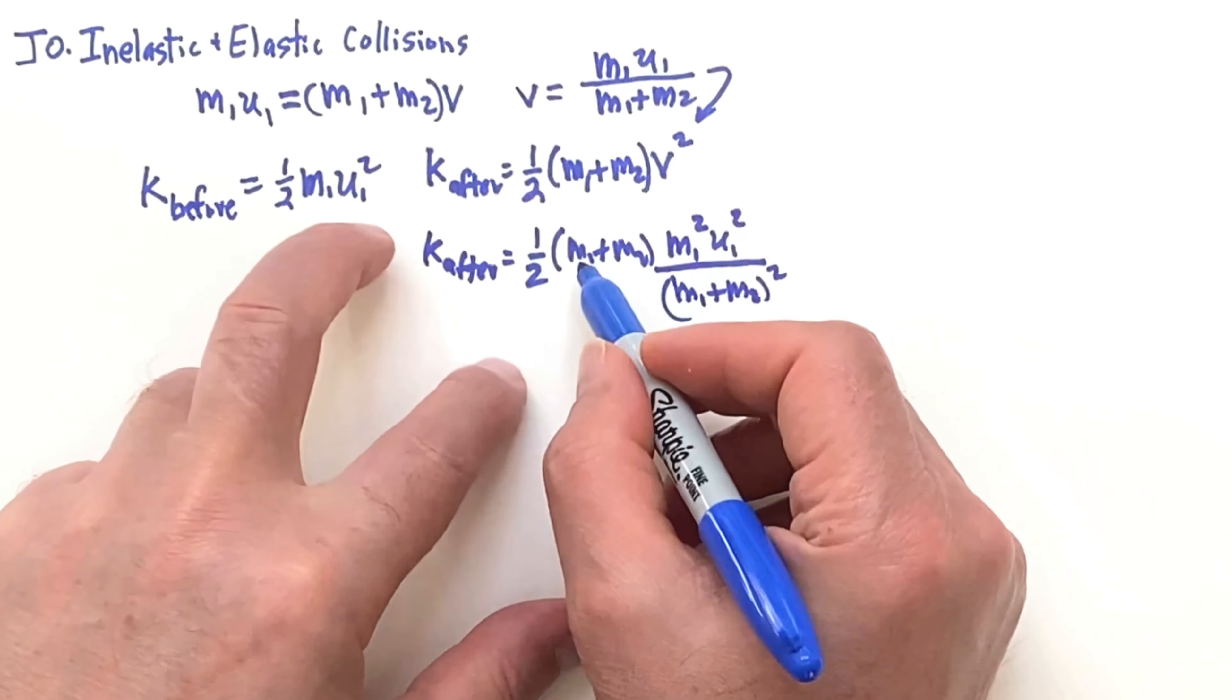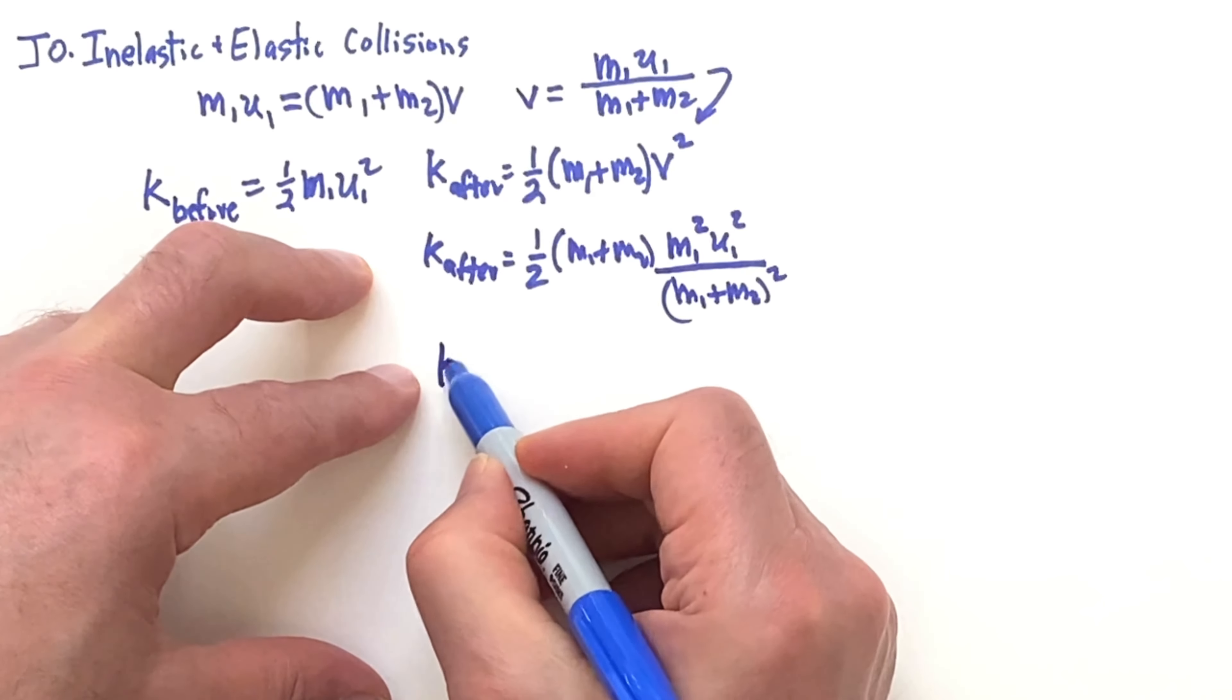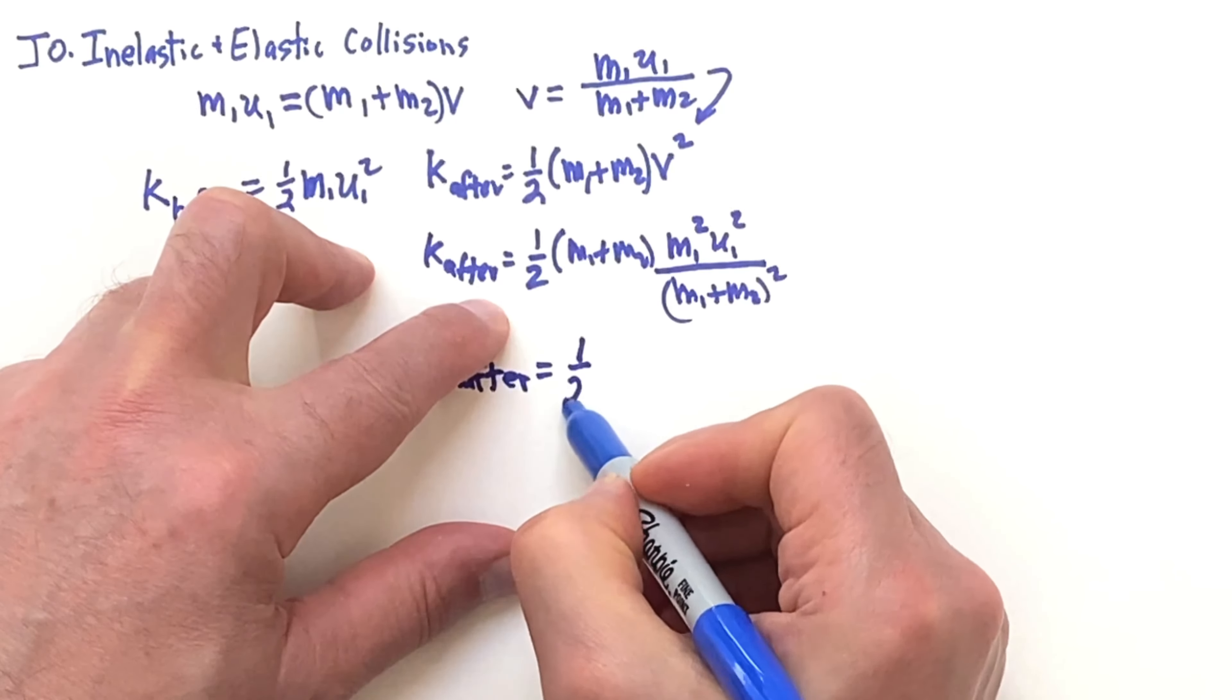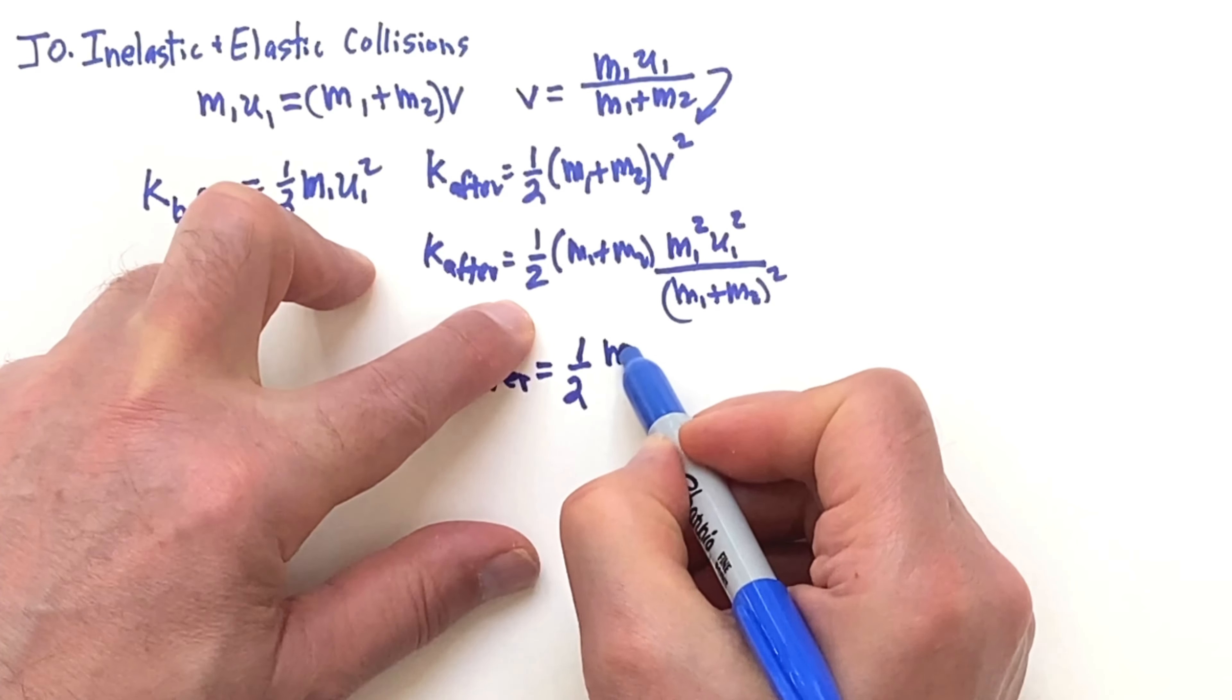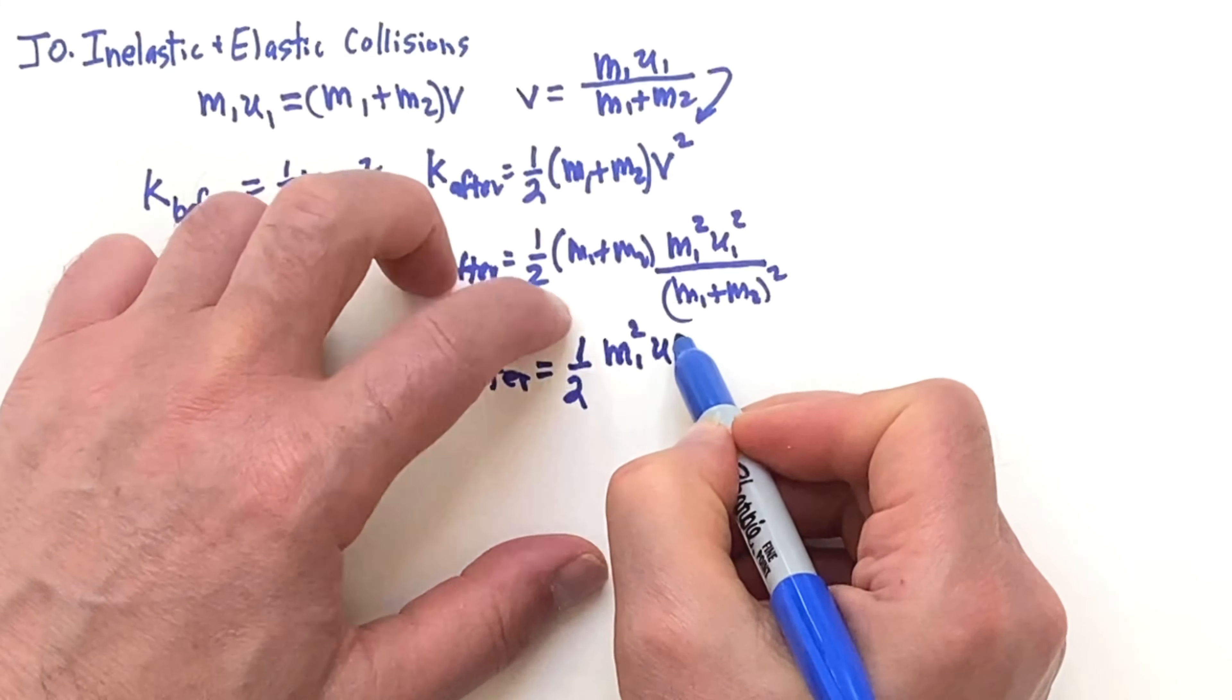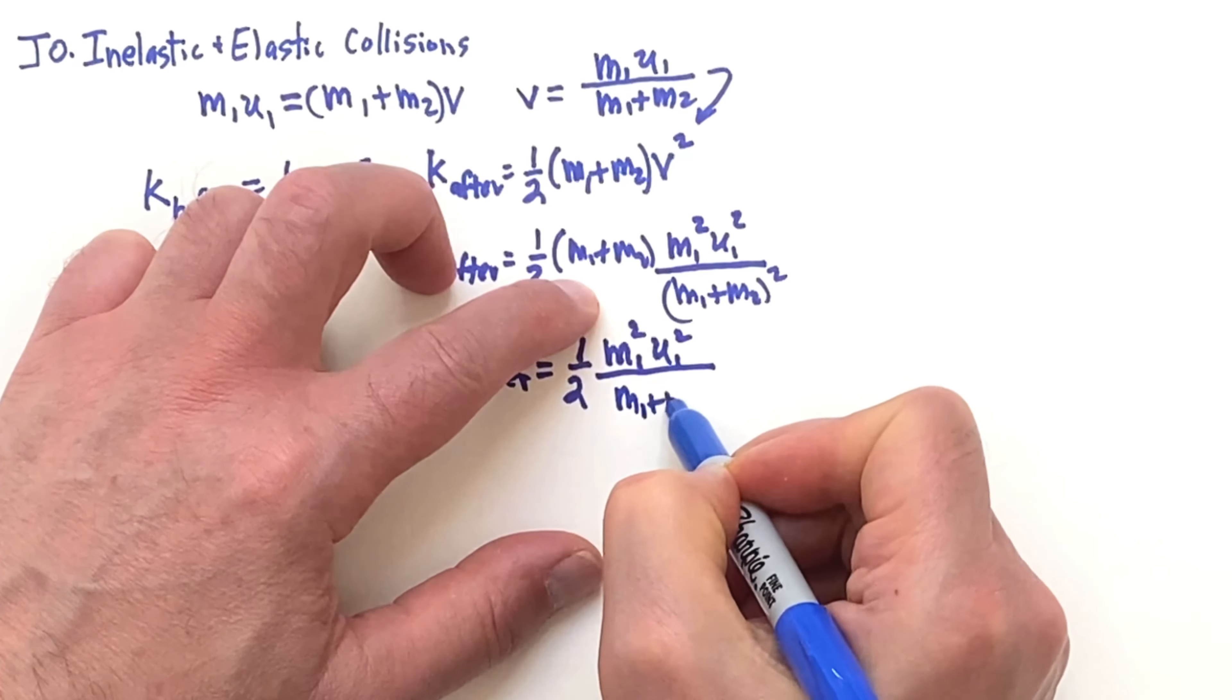Now we'll get a cancellation of one factor of M1 plus M2, and the kinetic energy after will be one-half, the numerator here will be M1 squared U1 squared, and that's going to be divided by M1 plus M2.